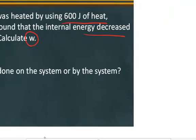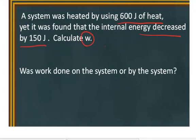In this case, we recognize that delta U is equal to Q plus W. In this case, we're calculating W. Q, a system was heated. Again, that's energy being added to the system. So that's a positive 600 joules was added to the system.